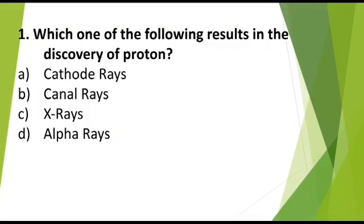MCQ number 1: Which one of the following results in the discovery of proton? A: Cathode rays, B: Canal rays, C: X-rays, D: Alpha rays. Correct answer is canal rays.